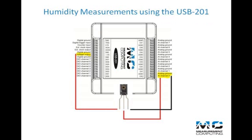Okay, so now that you have the leads attached to the HIH-4000 humidity sensor, let's go ahead and wire it up to the USB-201.